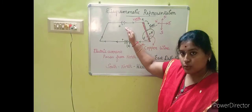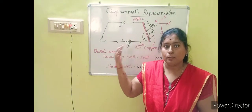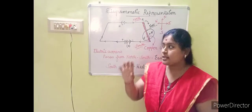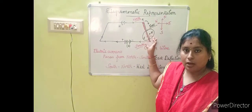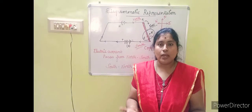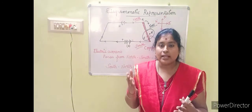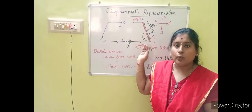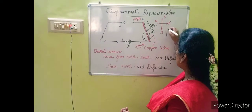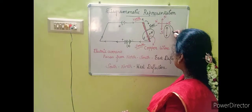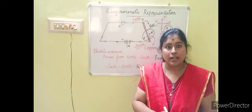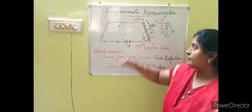The current will start to move from one end of the copper wire to the other. Whatever direction the current is flowing decides the deflection of the compass needle. If the current passes from the north end of the copper wire towards the south end, the deflection will take place in the east direction — the needle will get deflected towards the east side. This east deflection indicates the current is flowing from north to south.